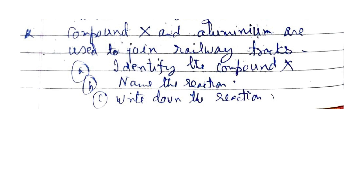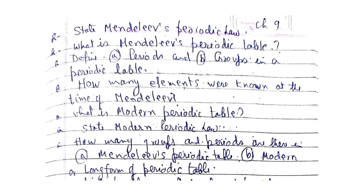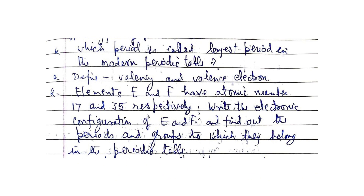State Mendeleev's periodic law. What is Mendeleev's periodic table? Define periods and groups in a periodic table. How many elements were known at the time of Mendeleev? What is the modern periodic table? State the modern periodic law. How many groups and periods are there in Mendeleev's periodic table and the modern long form of the periodic table? Which period is called the longest period in the modern periodic table?